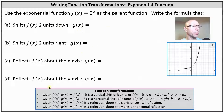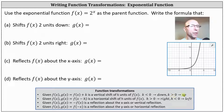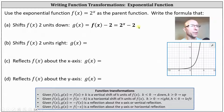Looking at our notes, given f of x, g of x equals f of x plus k is a vertical shift of k units of f of x, where if k is less than zero or negative, the shift is down, and if k is greater than zero or positive, the shift is up. Because we want to shift two units down, we have g of x equals f of x minus two, giving us g of x equals two to the power of x minus two.